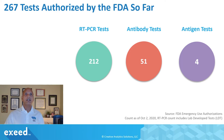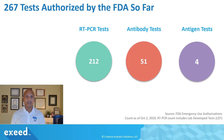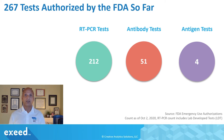So far, 267 tests have been authorized by the FDA: 212 are RT-PCR tests, 51 are antibody tests, and 4 are antigen tests. So there are a lot of tests available right now.